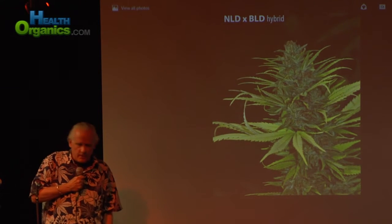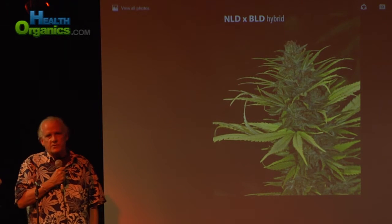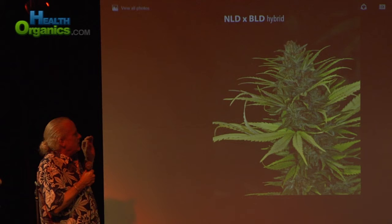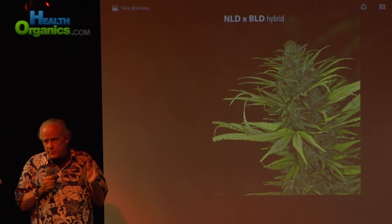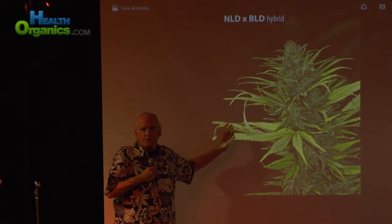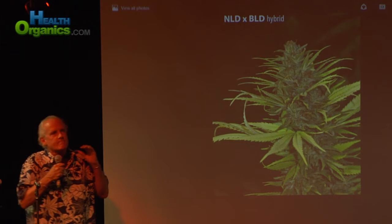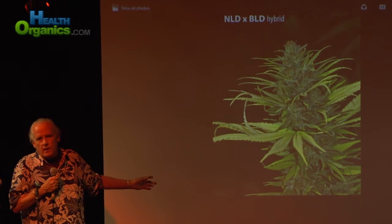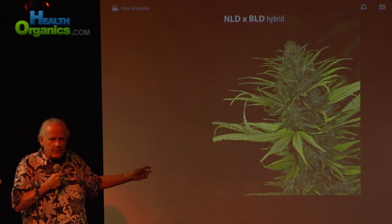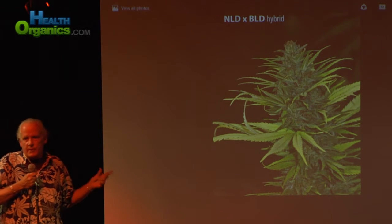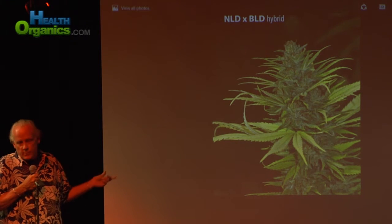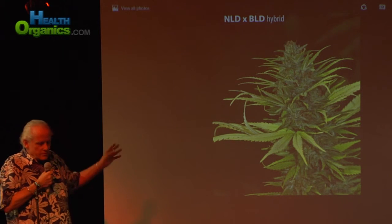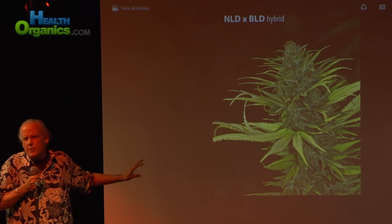This is Skunk Number One. I've lived 29 years in the Netherlands. Efforts were made to make something closer to true breeding. Skunk Number One, due to the evolution of the seed business, is probably the seminal variety in everything you grow. We worked for years to make the closest to a pure-breeding variety you can find — it still had four basic phenotypes at release, but it's the closest to a pure-breeding variety we've probably ever had.